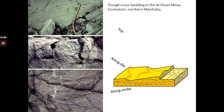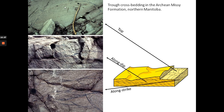Here are field examples of trough cross bedding at different orientations from the Archean Missy Formation in Manitoba, Canada. From the top, you get arcuate lines representing the tops of cross beds. From the side, you can see cross beds that pinch out rapidly toward the front or back. From the front — perpendicular to the flow — you get the classic trough cross bedding geometry.